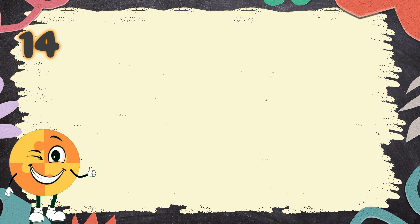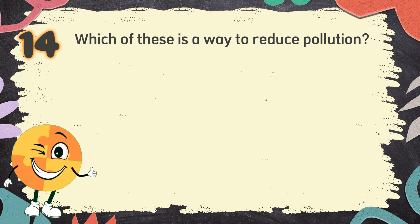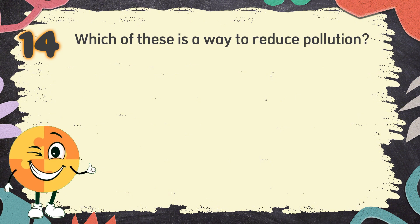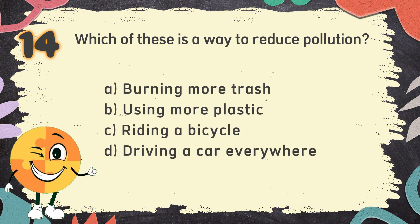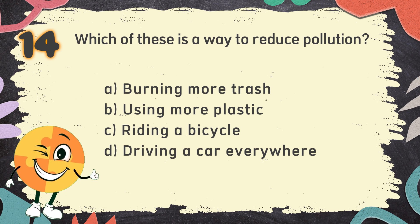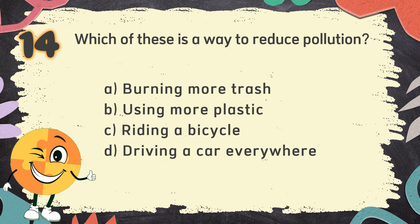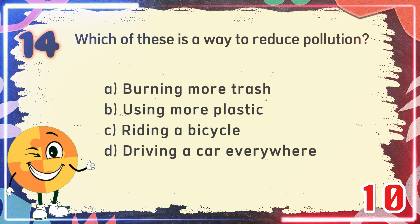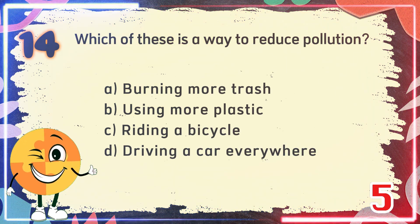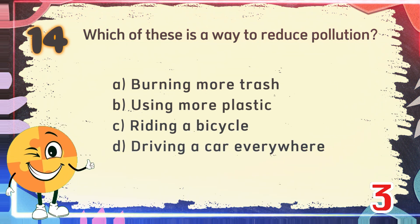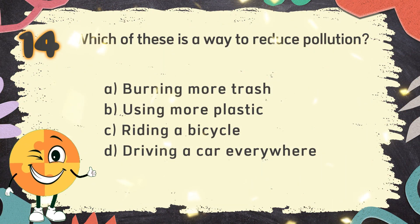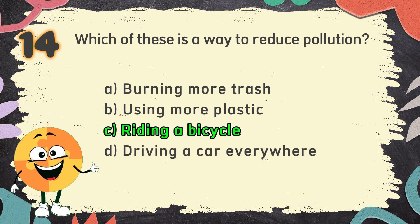Number 14. Which of these is a way to reduce pollution? The choices are A. Burning more trash, B. Using more plastic, C. Riding a bicycle, D. Driving a car everywhere. The correct answer is C. Riding a bicycle.